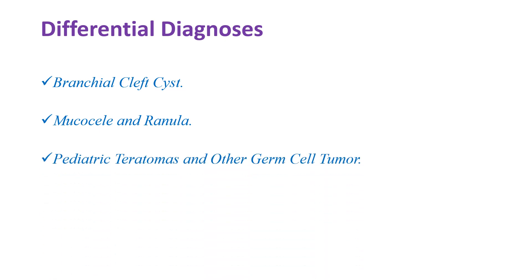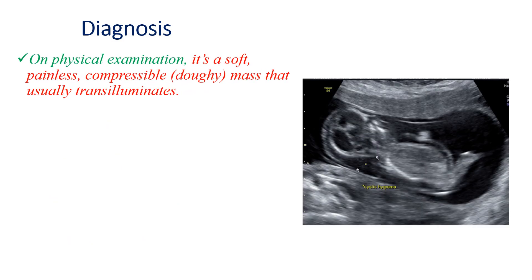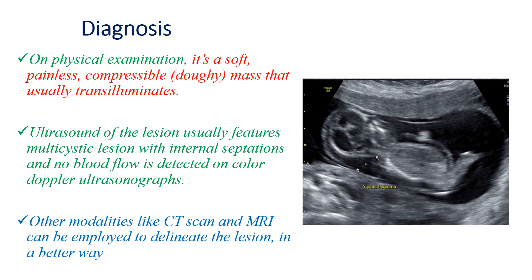There are several differential diagnoses, including branchial cleft cysts, mucosal granuloma, pediatric teratomas, and other germ cell tumors. Thyroglossal duct cysts and thyroid goiter can also be differential diagnoses, but can be differentiated based on physical examination and investigation. On physical examination, cystic hygroma is a soft, painless, compressible mass that usually transilluminates. Ultrasound typically shows a multiloculated lesion with internal septations and no blood flow on color Doppler. CT and MRI can be used for further delineation.